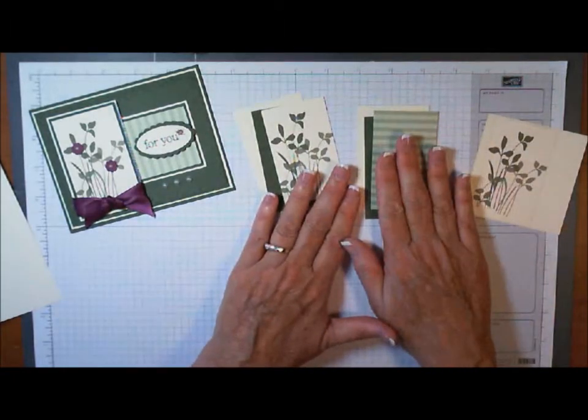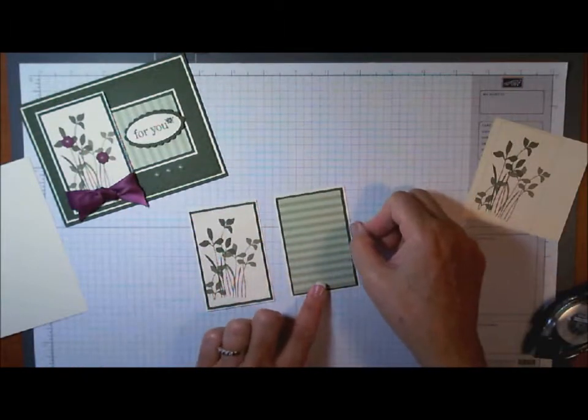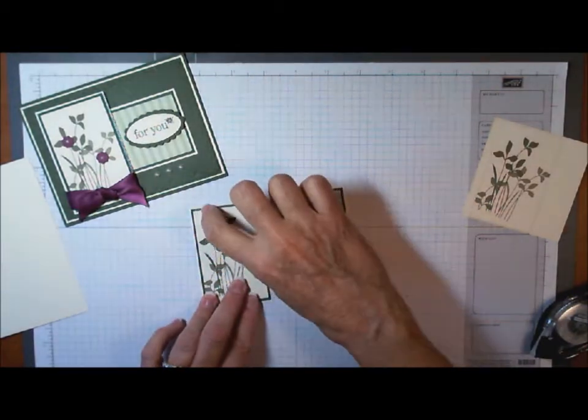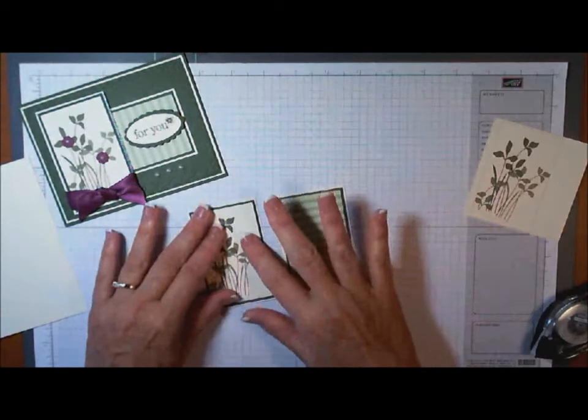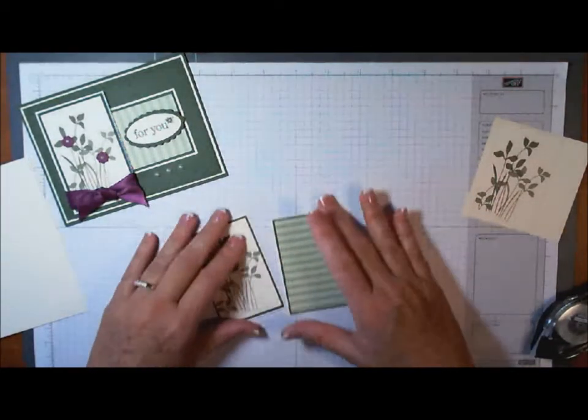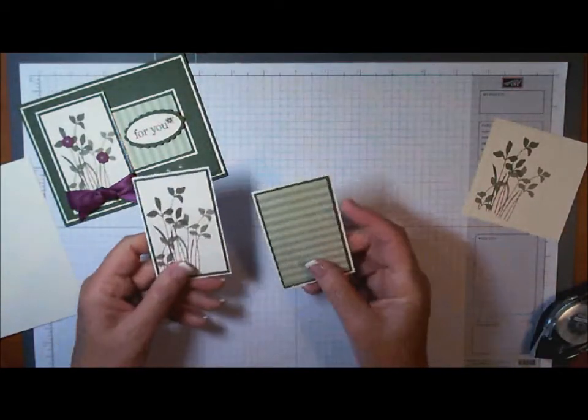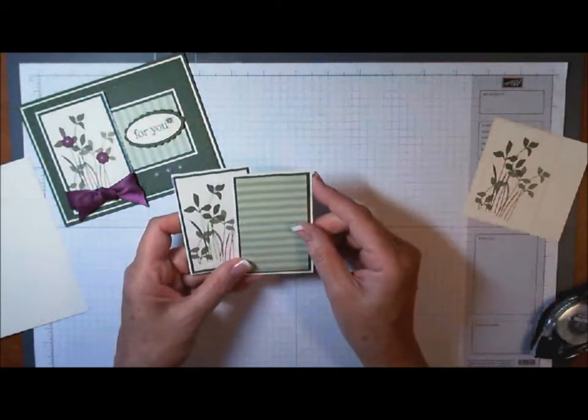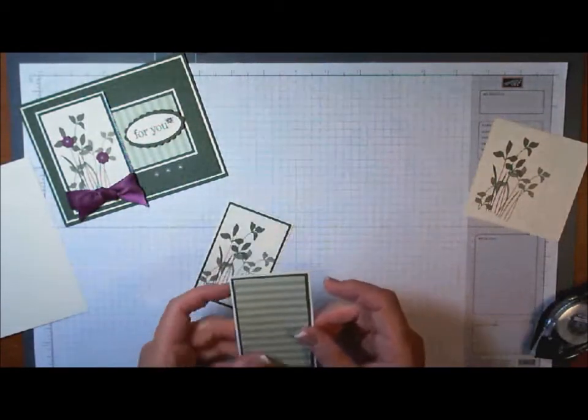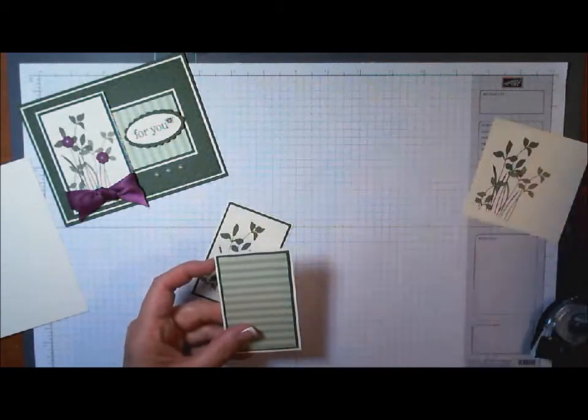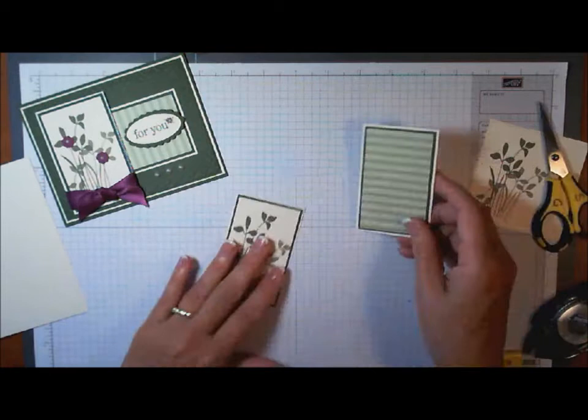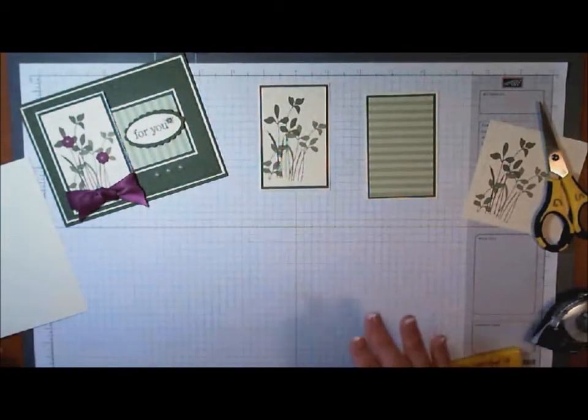You can see I made very small borders with my matting this time. Usually I allowed an eighth of an inch all the way around, but I wanted this to be very monochromatic with just the predominantly green showing with just a little bit of the brightness of the Very Vanilla. So I made my margins and matting very, very small this time, just barely a sixteenth of an inch. Those two pieces are ready to be mounted to the face of our card.